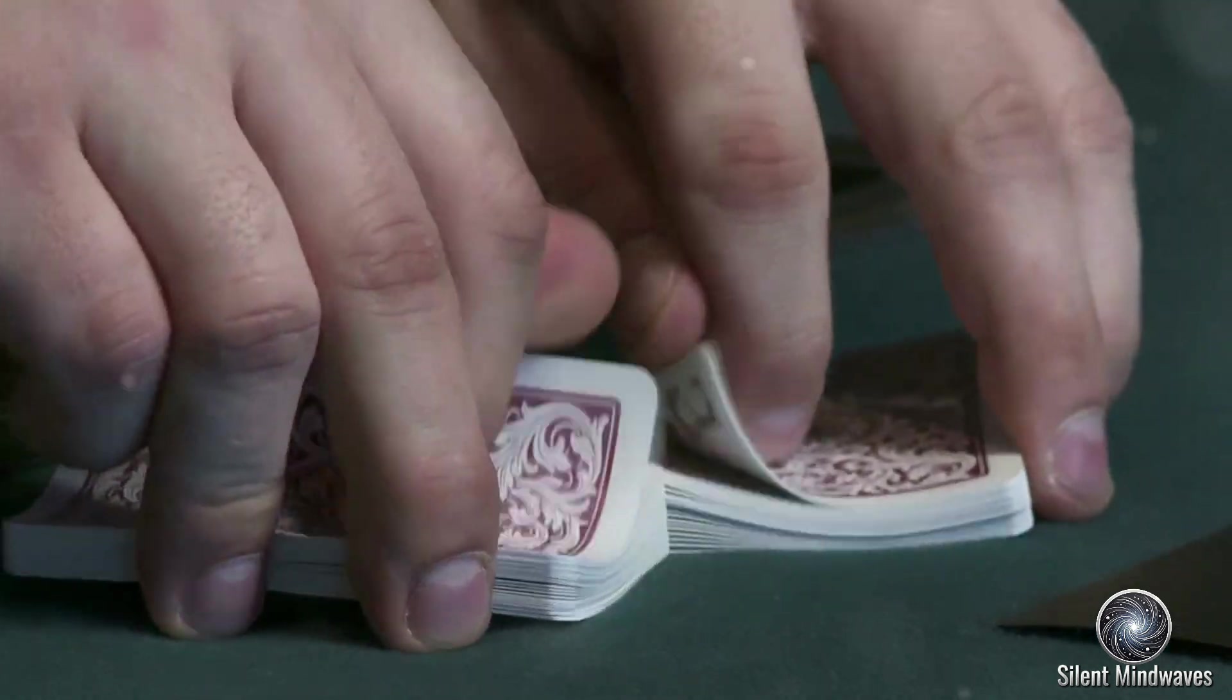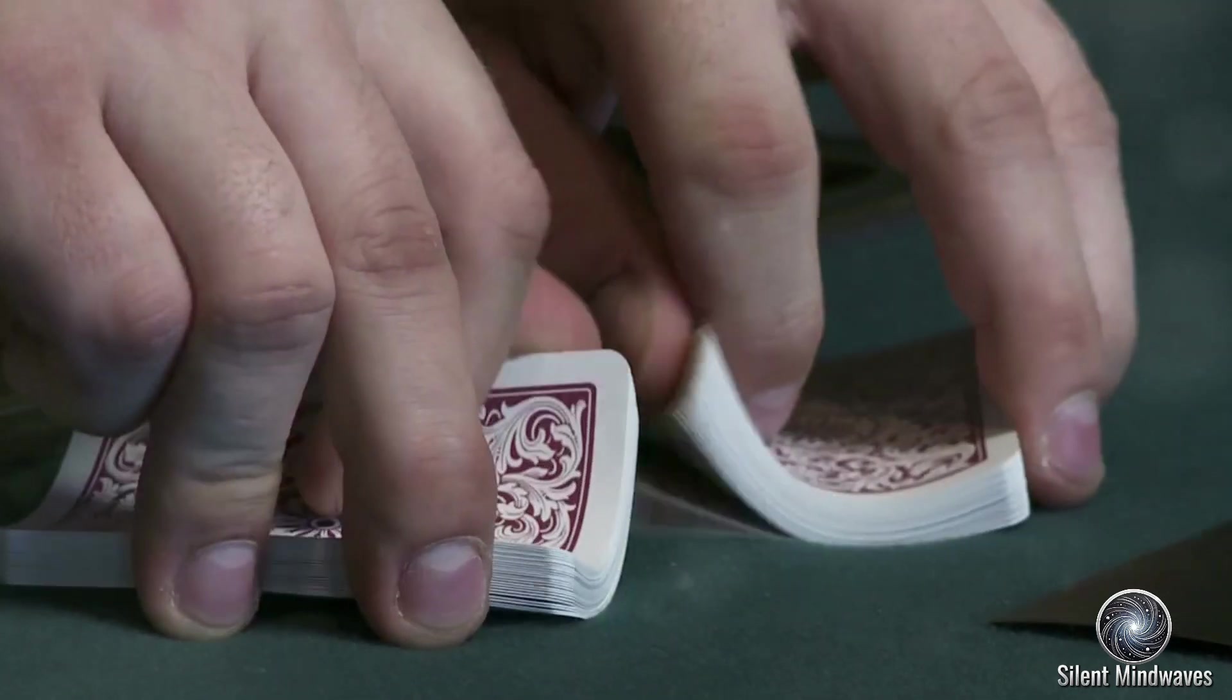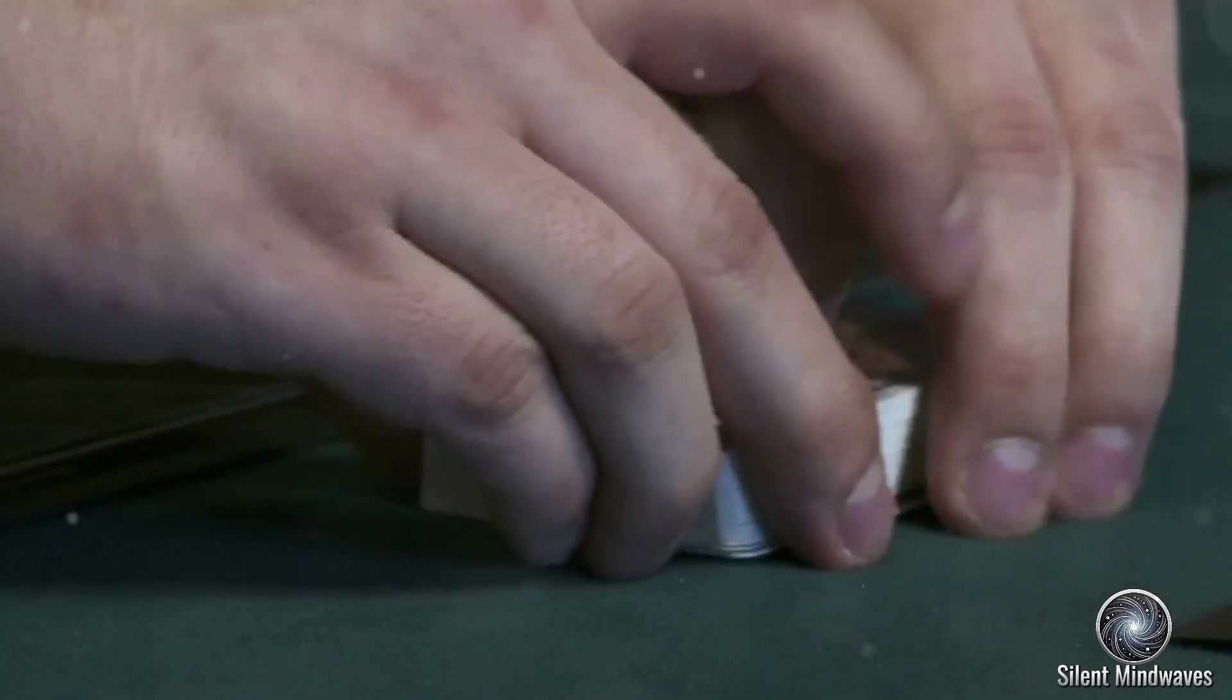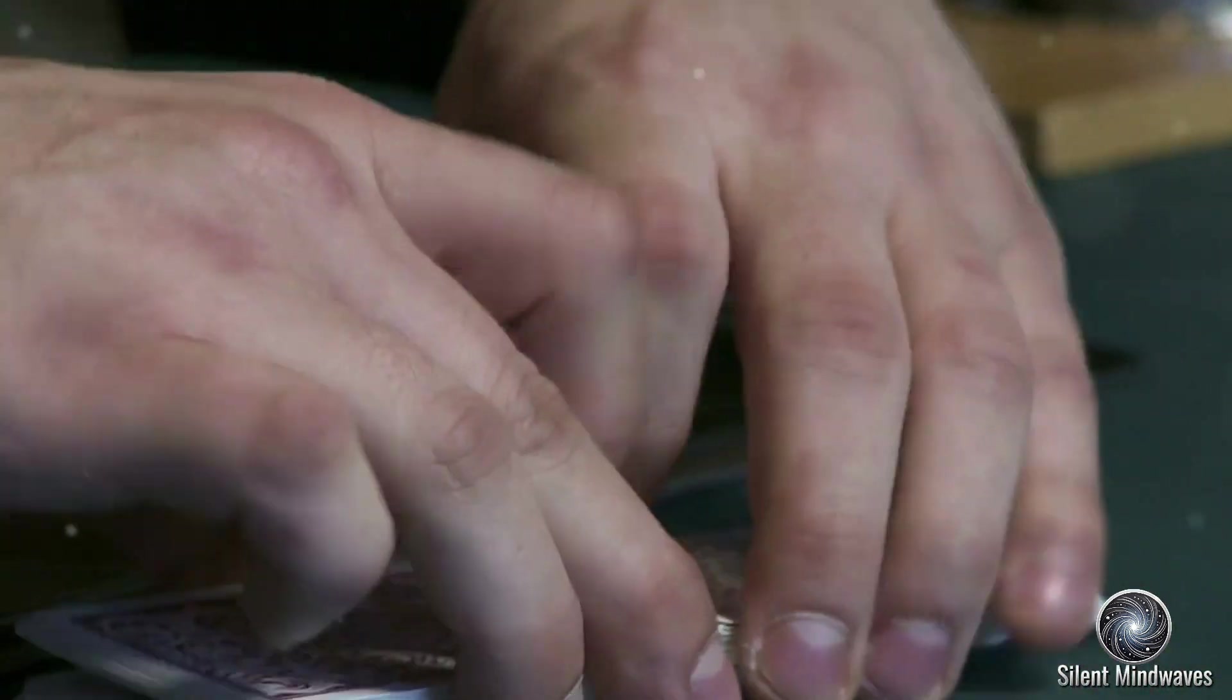Now, shuffle the deck thoroughly. The cards are now in a highly disordered state, with countless possible arrangements that all appear equally random. This state of high entropy reflects the vast number of ways in which the cards can be arranged while still representing a shuffled deck.